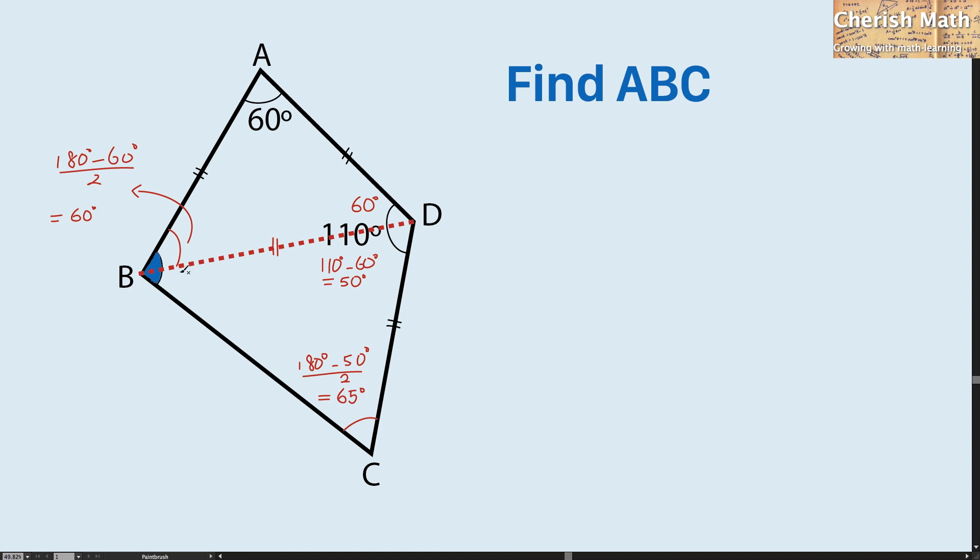And this 65 degrees applies here as well, simply because triangle BDC is an isosceles triangle.